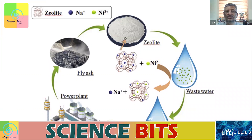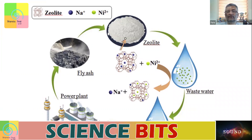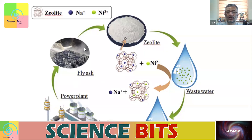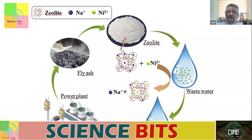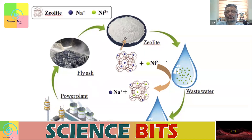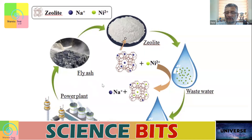Fly ash is also rich in zeolite. What you can do is take fly ash and extract zeolite from it, though of course you will be using a lot of water for that process.